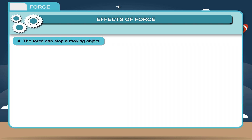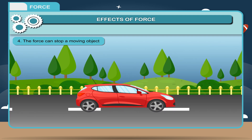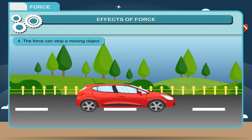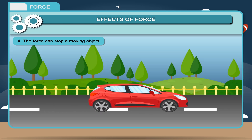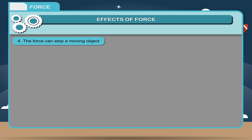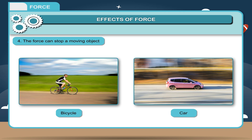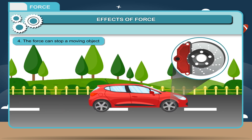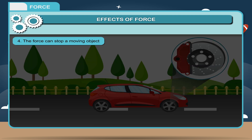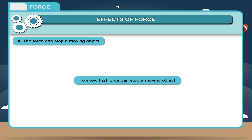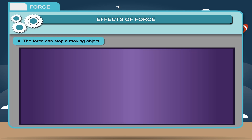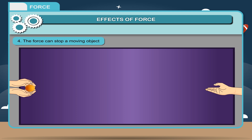The force can stop a moving object. If force is applied in a direction opposite to the motion of an object, its speed will decrease and after some time the body will stop. For example, a moving bicycle or car can be stopped by brakes, which apply a force in the opposite direction of motion. Activity: Roll a table tennis ball on the tabletop and ask your friend to catch it. When your friend catches the ball, the motion stops — hence, force can stop a moving object.